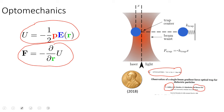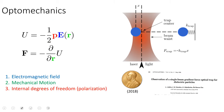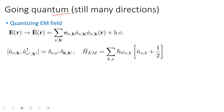That's basically optomechanics, which can be treated classically. You can notice there are three colors in this equation — red, blue, and green — corresponding to three different degrees of freedom: the electromagnetic field in blue, mechanical motion (the position of the particle), and the internal degrees of freedom corresponding to polarization. If we're going to go quantum, it's not quite clear which way to go.